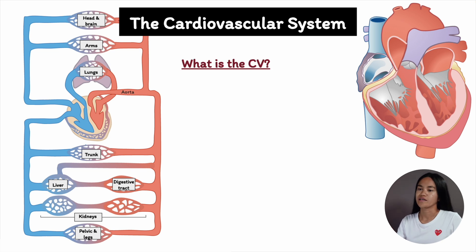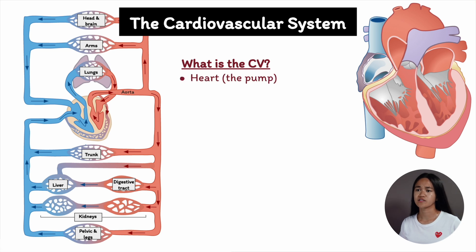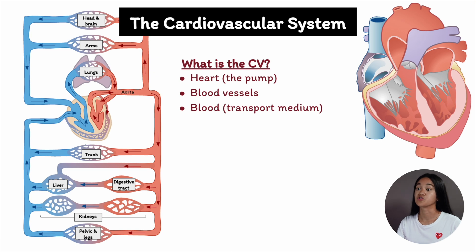First of all, what is the cardiovascular system? The circulatory system is also called the cardiovascular system, where the word 'cardi' refers to the heart and 'vascular' refers to the blood vessels. It consists of the heart, which is the pump that generates the pressure gradient for blood flow, and the blood vessels, which are a series of tubes filled with blood.